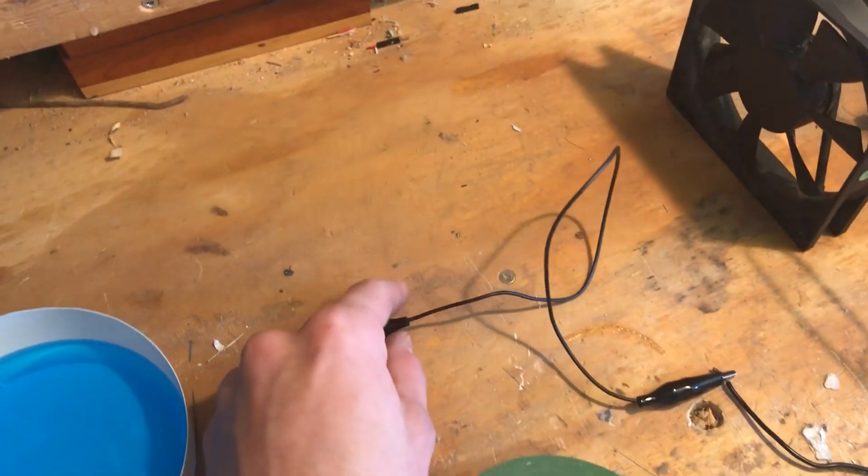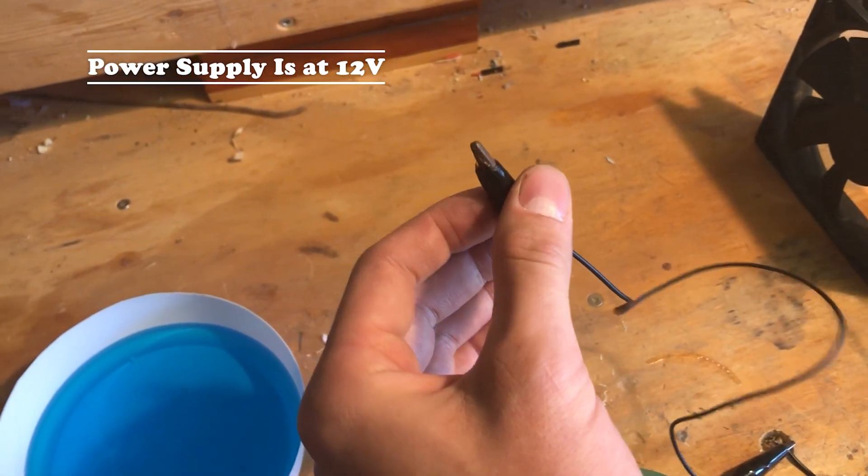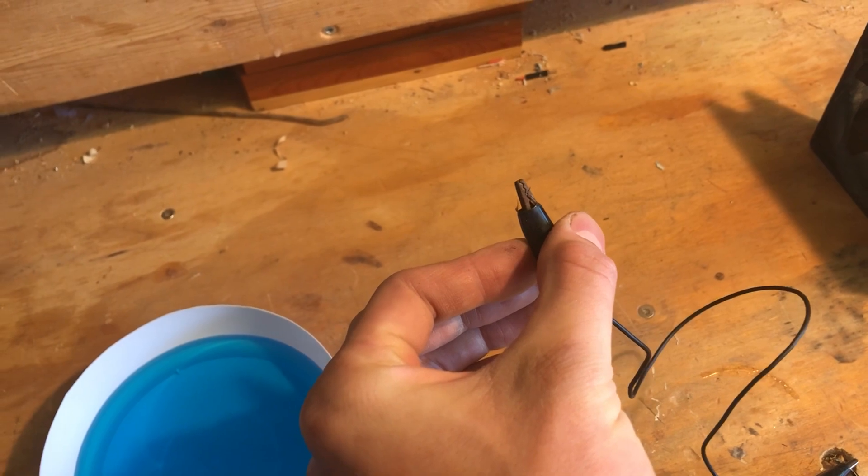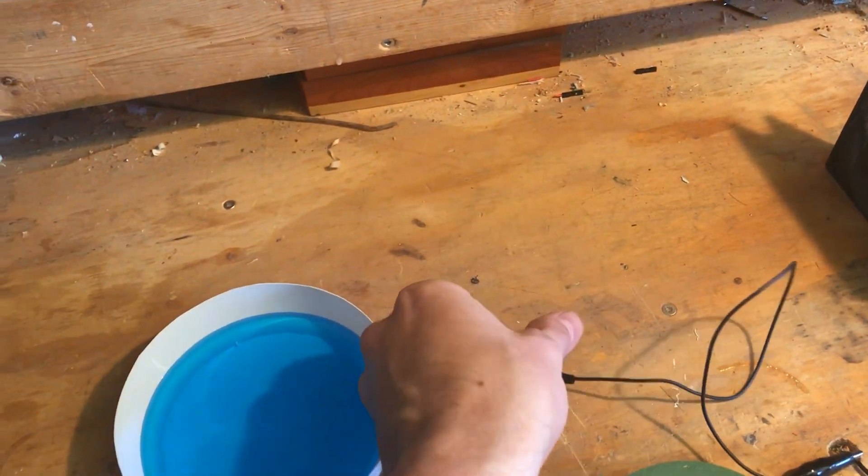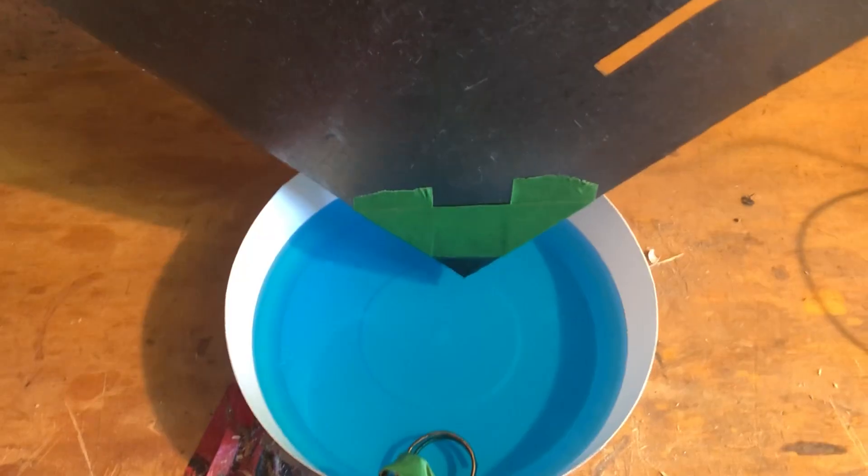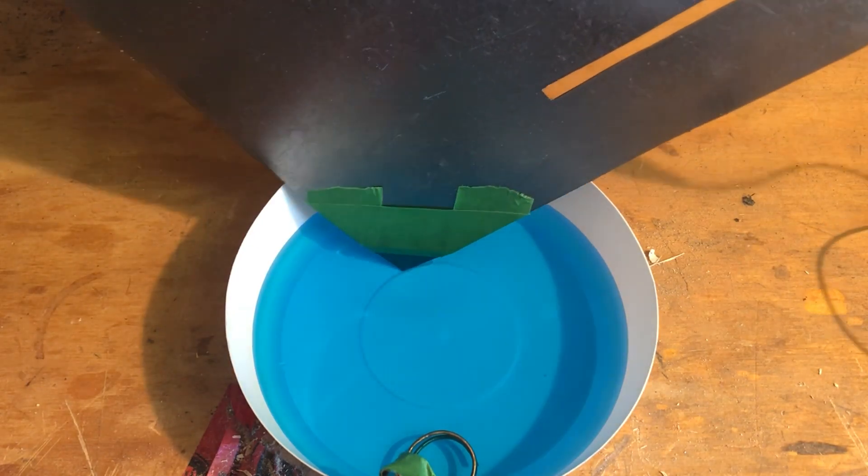Then you're just going to connect the negative end onto the graphite foil. Again, being really, really careful. If you have too strong an alligator clip, it can just snap right through it. So this is pretty breakable stuff, just be gentle. Once everything is all wired up, you're just going to gently place that in there and turn on your power supply.